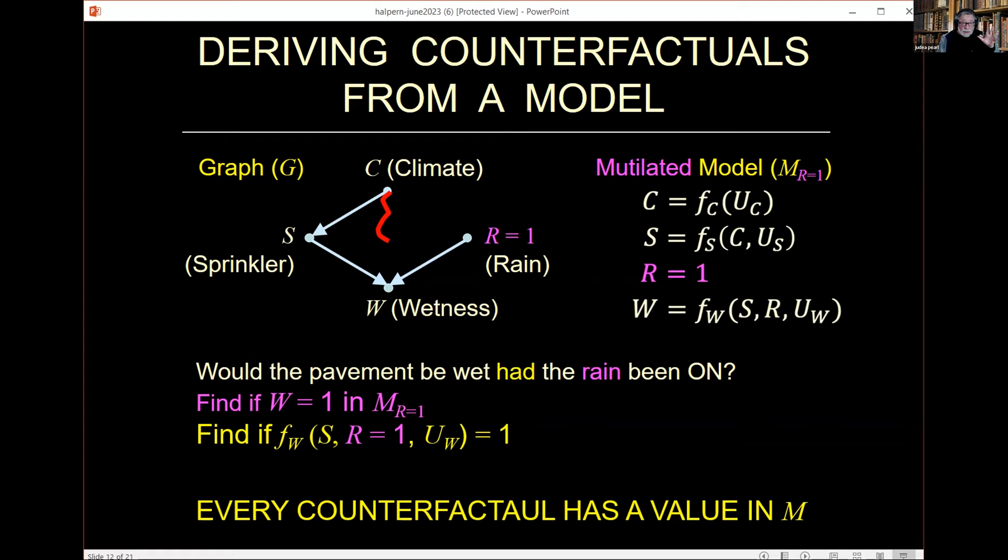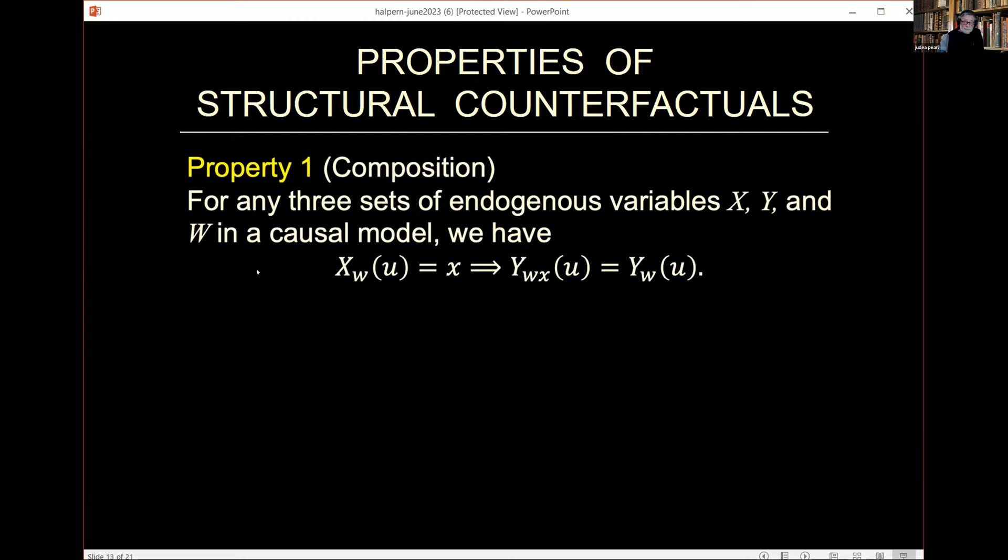Now we come and ask the question, how can we axiomatize it? Joe, in 1998, came out with three properties which were sufficient. I emphasize the sufficiency. One is composition. Forget about W here, it's constant throughout. If I have observed that variable capital X equals small x, then what the value of Y had X been what I observed is exactly what Y is observed. If I translate it to experimental work, if a patient died when he took a drug on his own volition, then he would die as well if you forced him to take the drug. That is what it means. It's called consistency.